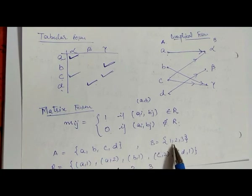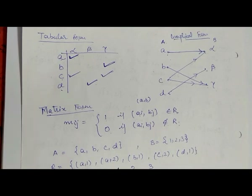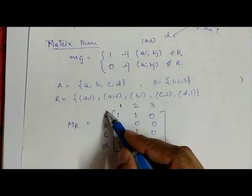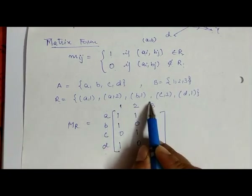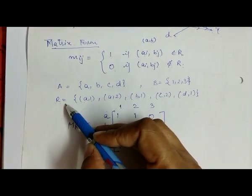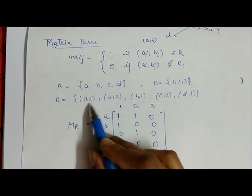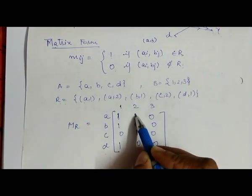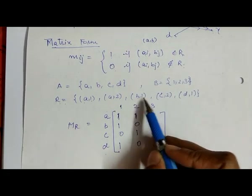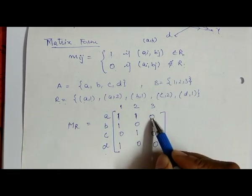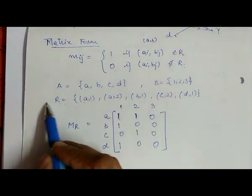Suppose we have set A = {a, b, c, d} and set B = {1, 2, 3}, with relation R = {(a,1), (a,2), (b,1), (c,2), (d,1)}. To represent this as matrix M_R, the rows represent elements of A and columns represent elements of B. If pair (a,1) belongs to R, mark it as 1; if (a,3) does not belong to R, mark it as 0.